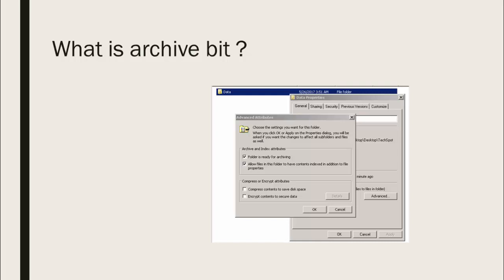If you create a folder newly, the archive bit box will be ticked, meaning ever since the file was created it has not been backed up. Once it is backed up, the tick mark will go away — until there is another change. The archive bit tells the backup process: 'Please take my backup because I have undergone a change or I have been newly created.' That's why the backup process always checks whether the archive bit is enabled.